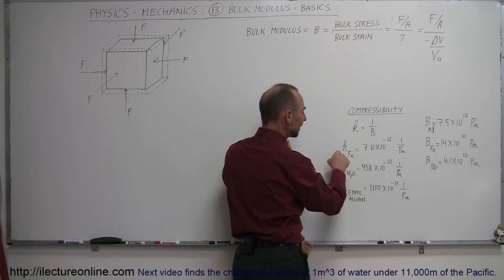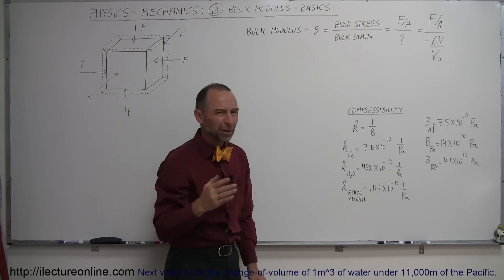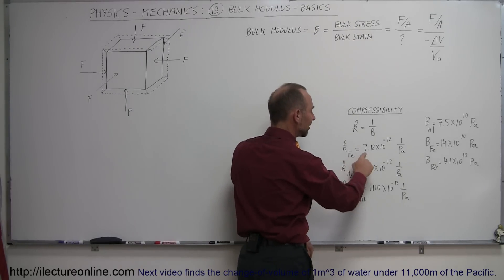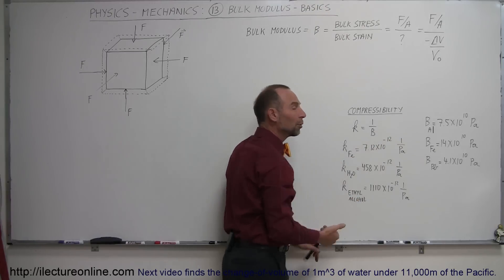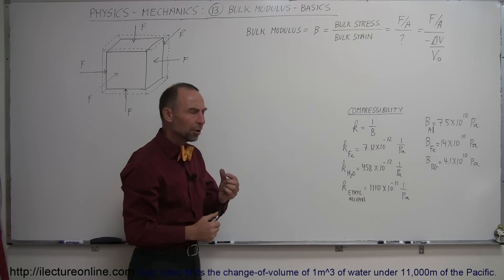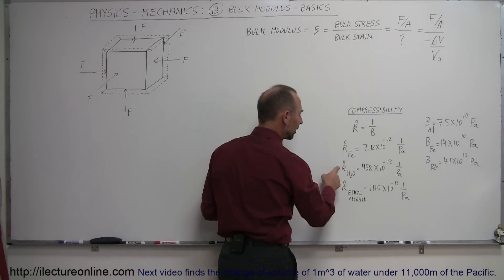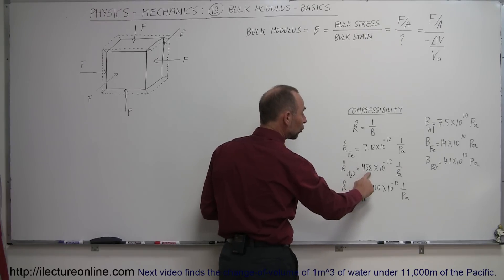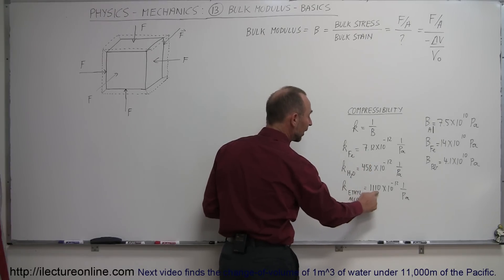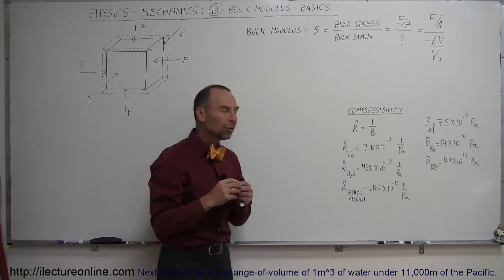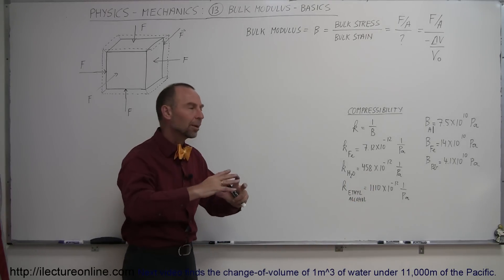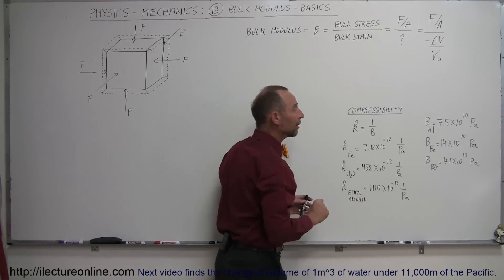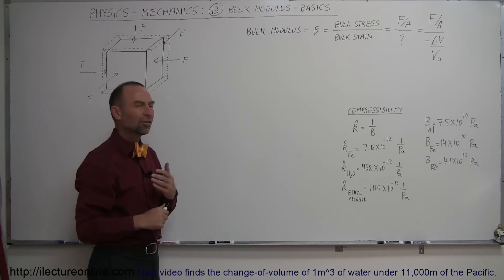For iron, the compressibility is 7.12 × 10⁻¹² inverse Pascals — a very small number. We typically use compressibilities for liquids. Notice that the compressibilities for water and ethyl alcohol are much greater than for iron, and ethyl alcohol is even more compressible than water. The bigger the compressibility number, the easier it is to compress. So lead has a bigger compressibility than iron, meaning lead is easier to compress.